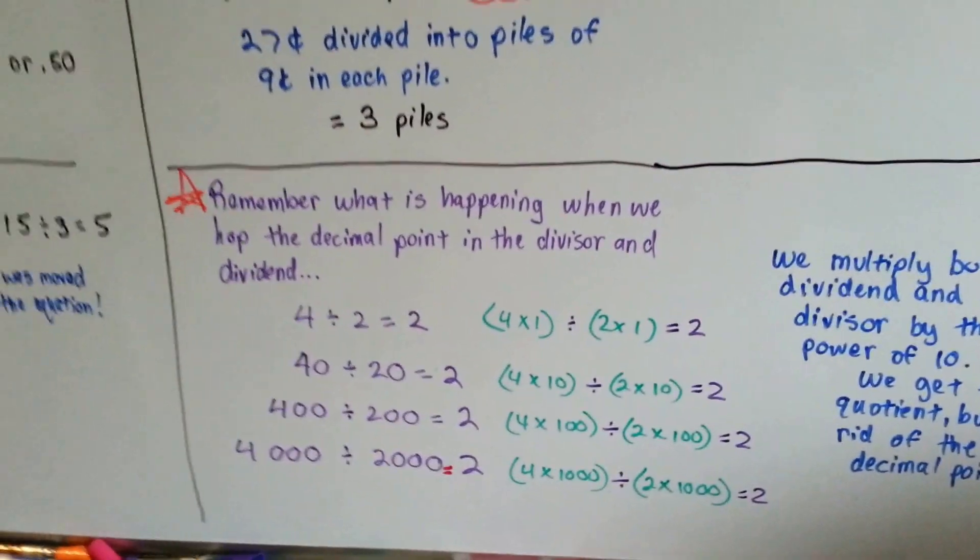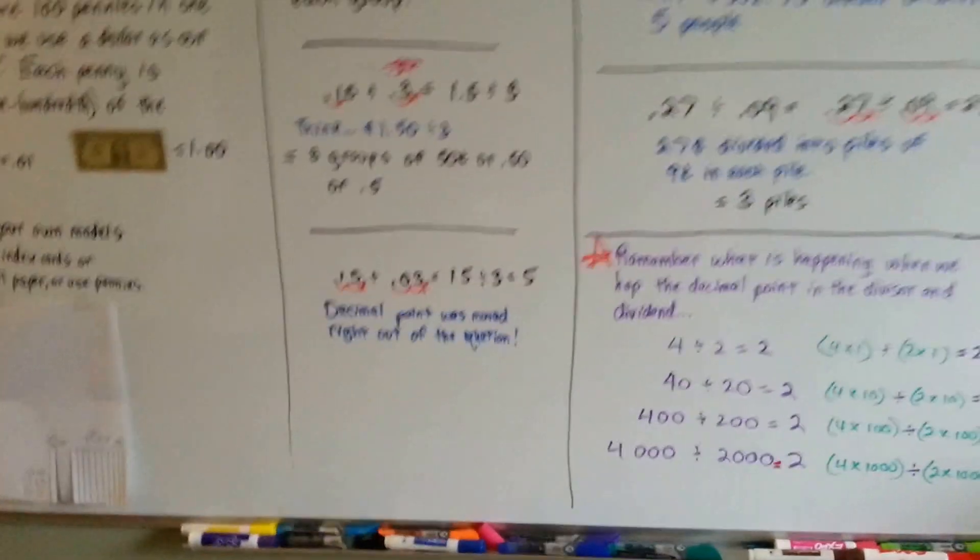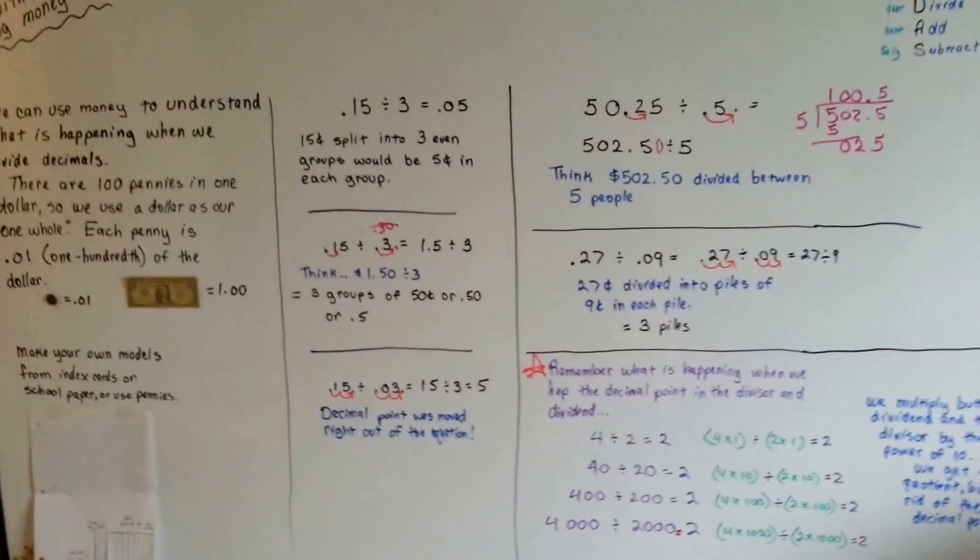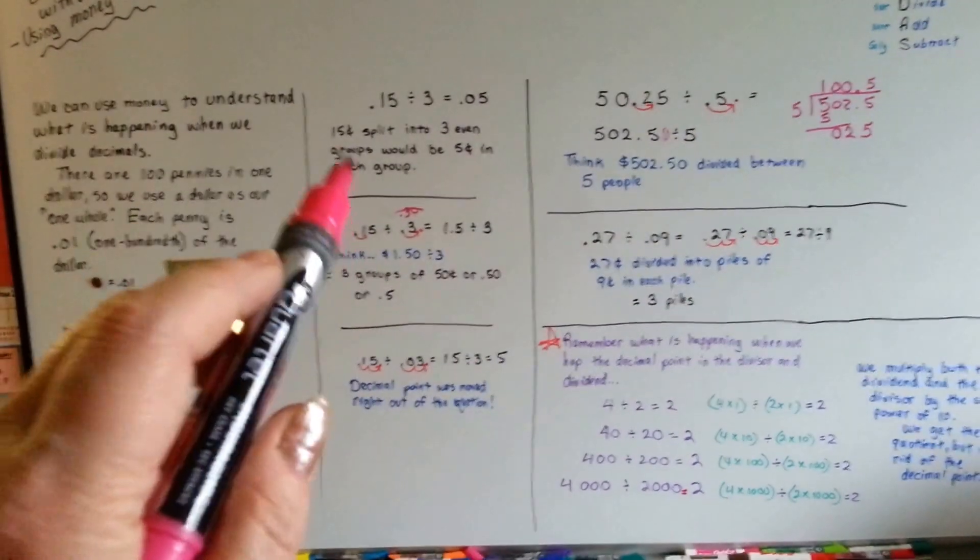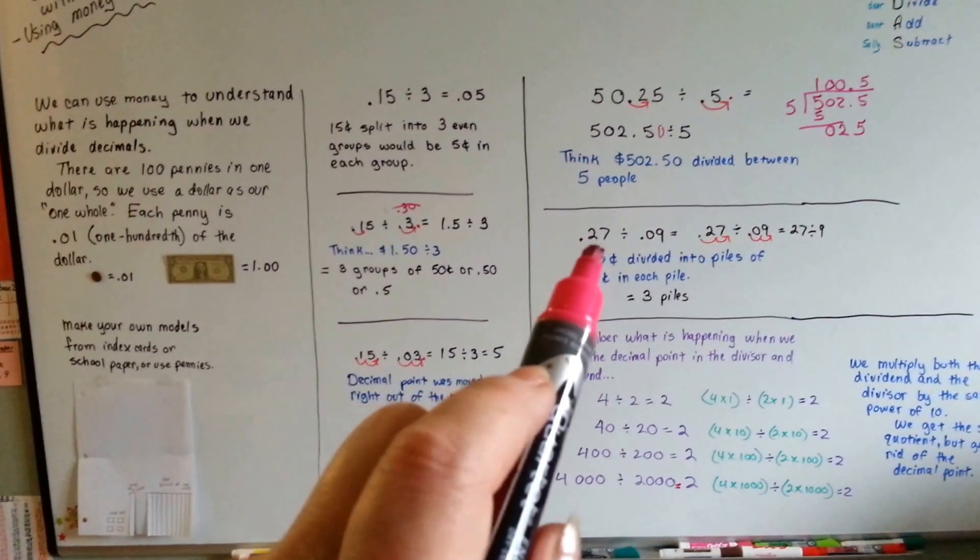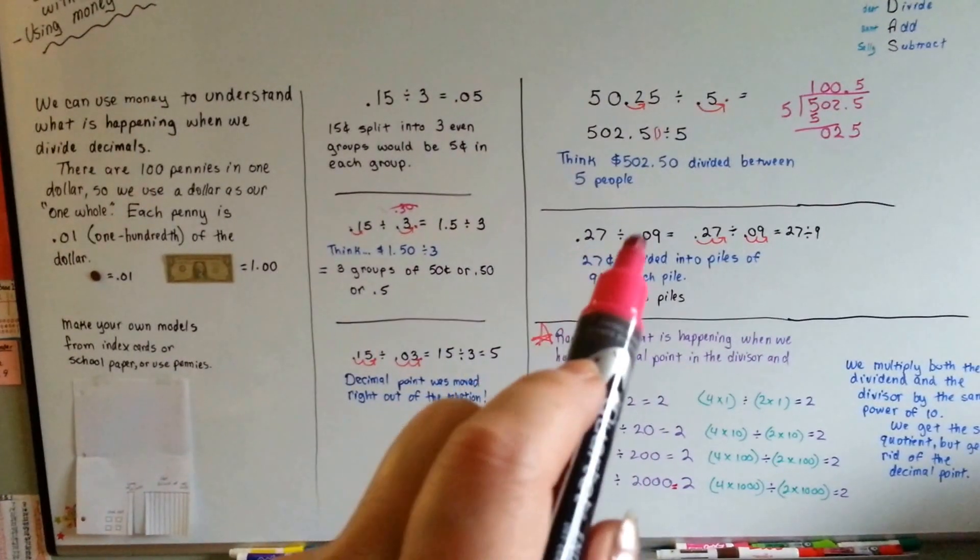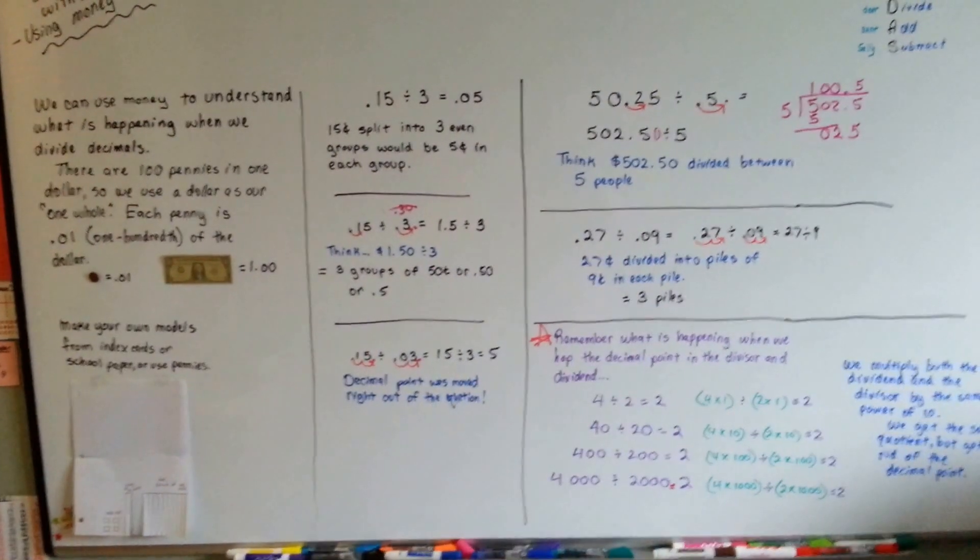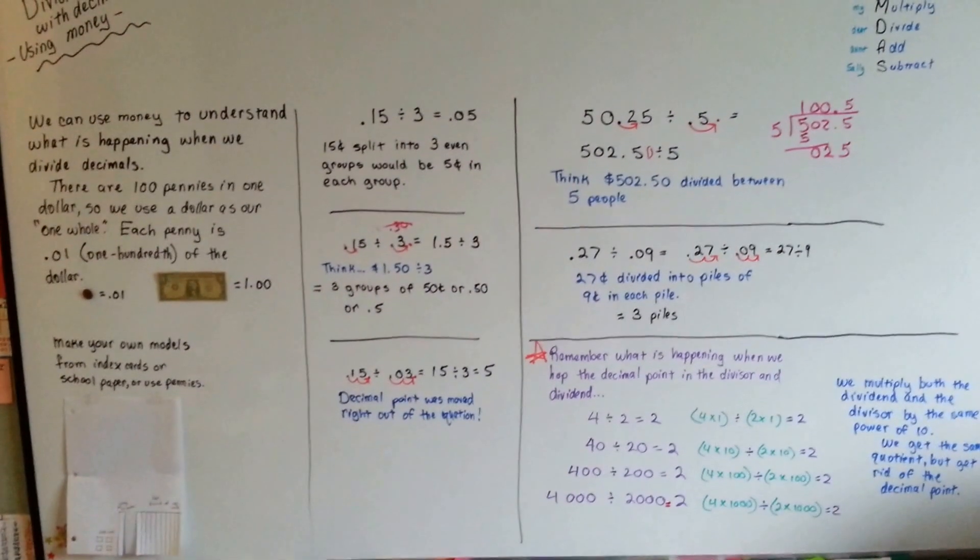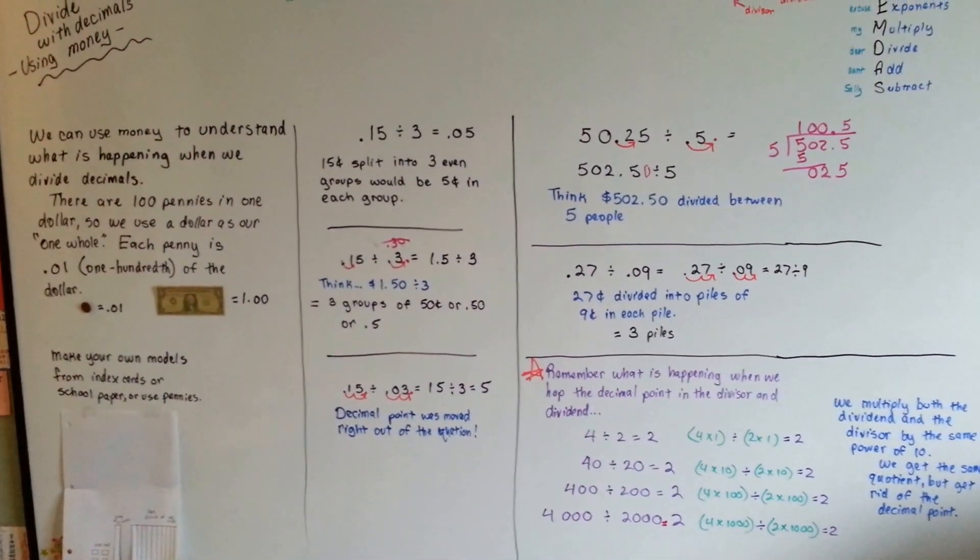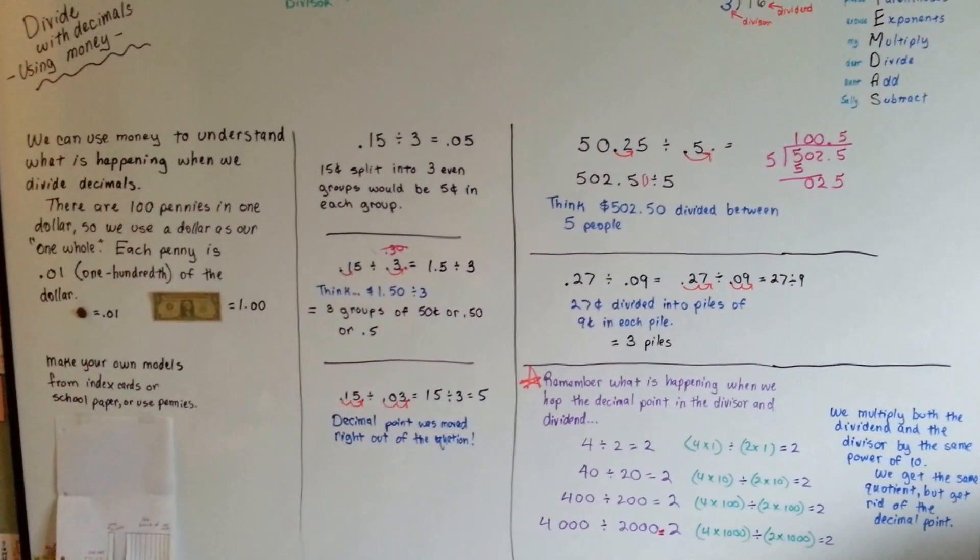And it makes our life easier to do the math. But we can also think of decimal division as money. And when you think of 0.27 divided by 0.09 as money, it's not that hard to think of 27 cents divided into piles of 9 cents. You can actually get pennies and do this.